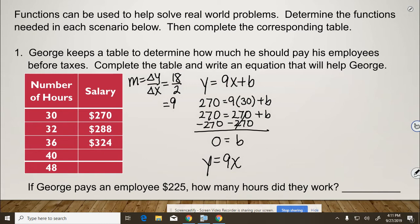So then we could finish up the table. If we do 40 times 9, we get 360. And if we do 48 times 9, 9 times 8 is 72, carry the 7. 9 times 4 is 36, plus 7 is 43. So it would be $432 for 48 hours.